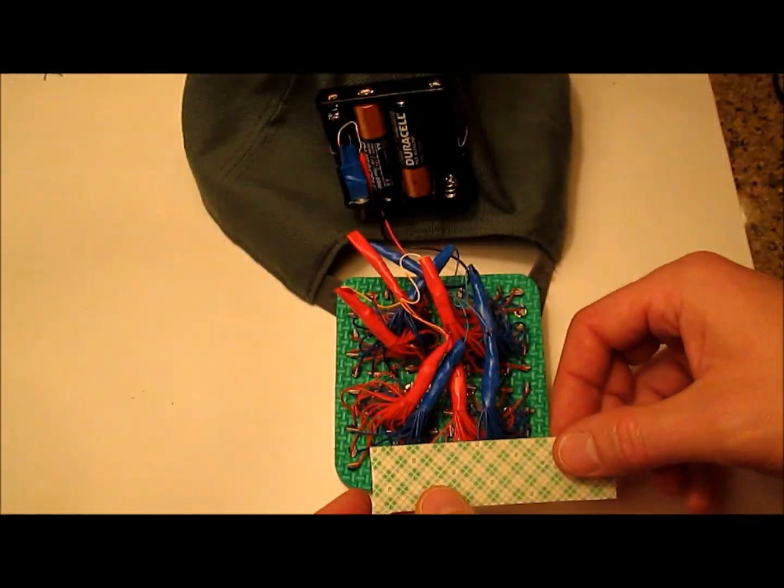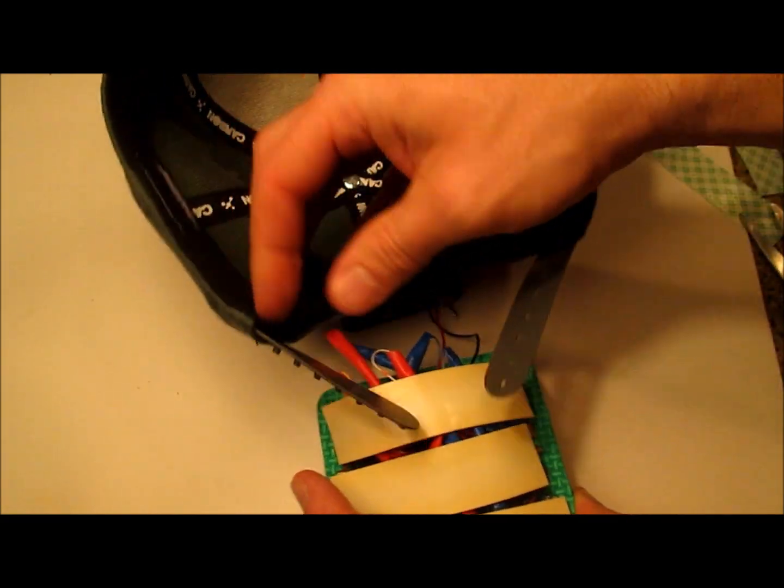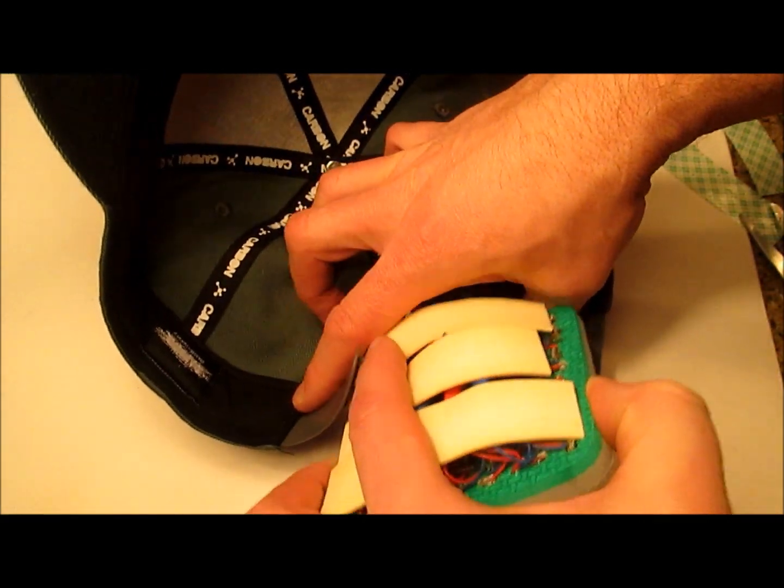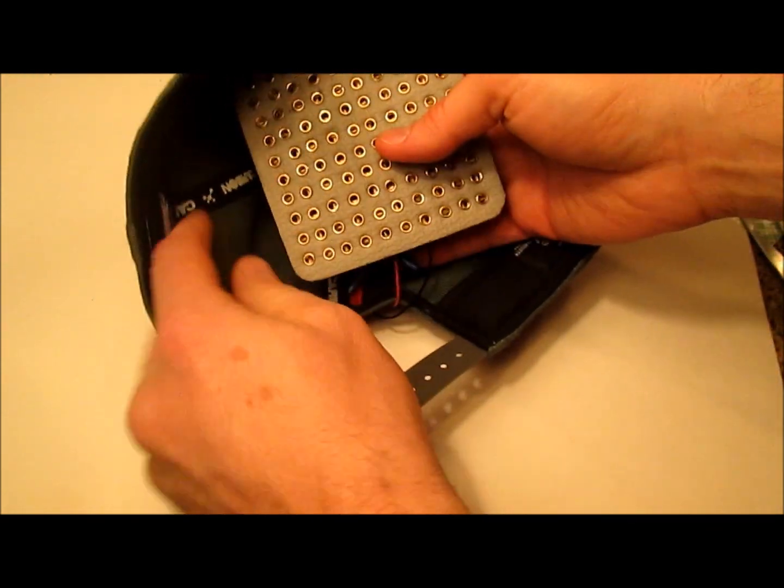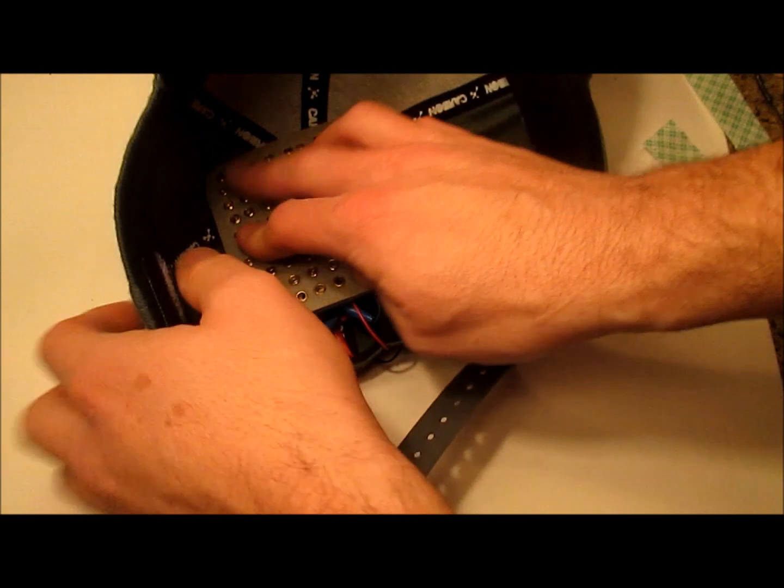Put several strips of double stick tape on the back of the laser pack. Now flip the hat over and flip the laser pack over into position wherever you need it in the hat and stick it down.